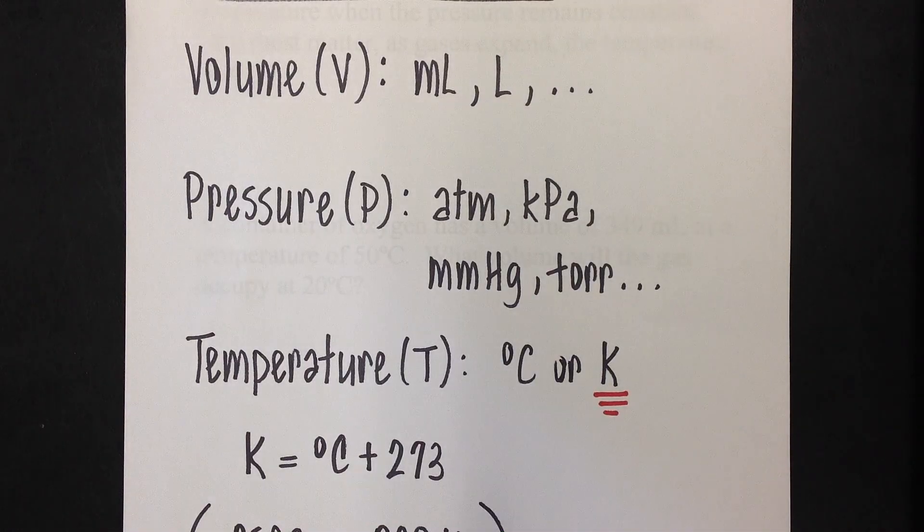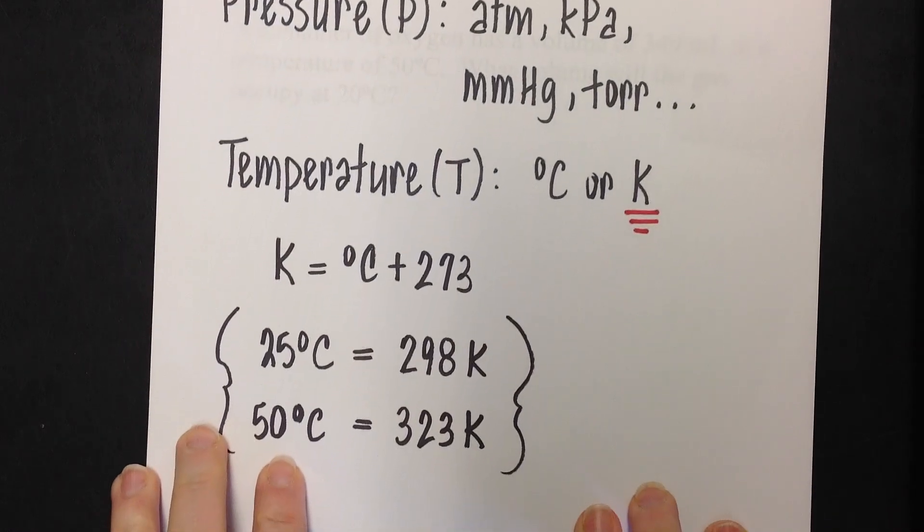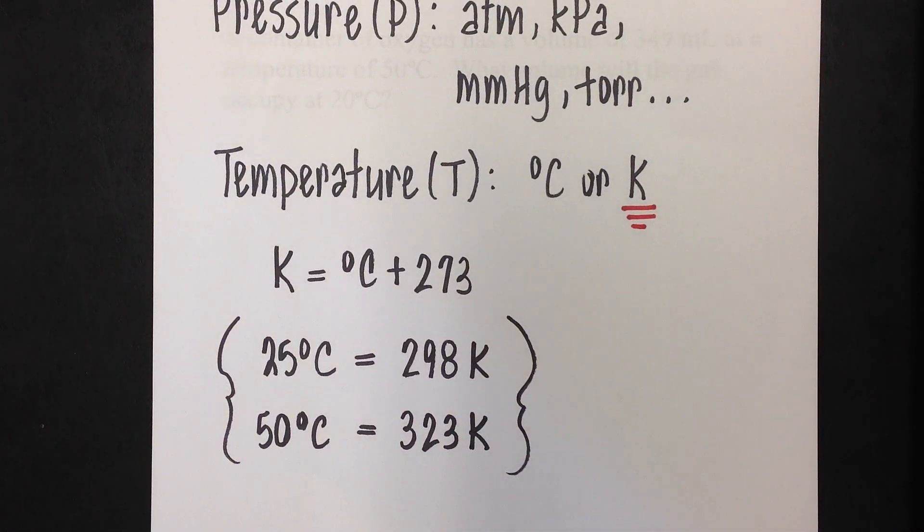And temperature. Now we're used to measuring temperature in either degrees Celsius or Fahrenheit typically in everyday life. But in chemistry we like to use Kelvin, which the symbol for Kelvin is a capital K. And just a reminder from the Boyle's Law lesson, if you want to change your temperature from Celsius to Kelvin, you simply add 273.